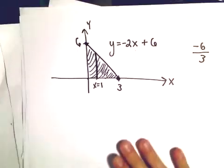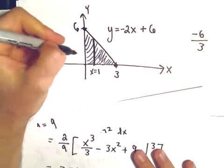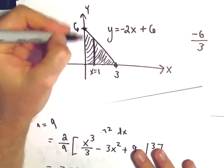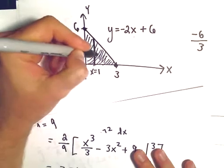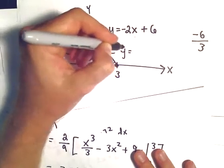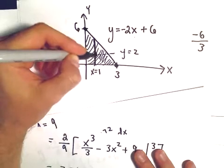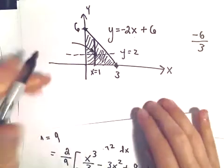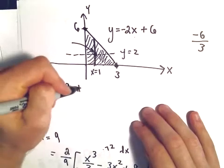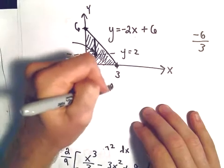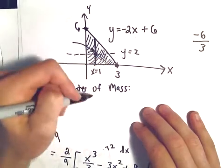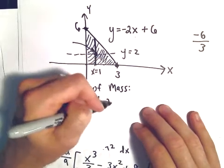Let's go back to our region. We've figured out that y-bar equals 2, so the center of mass is at the point (1, 2).